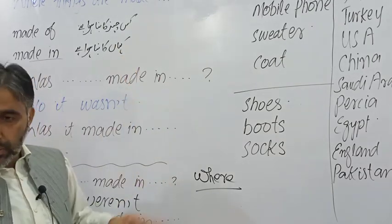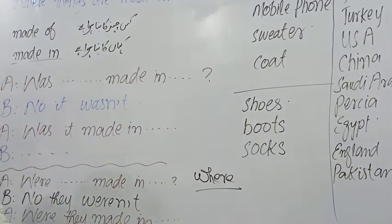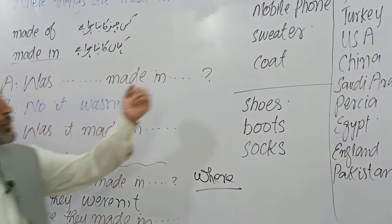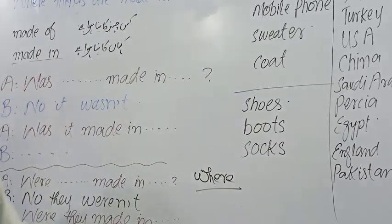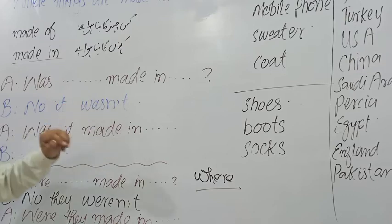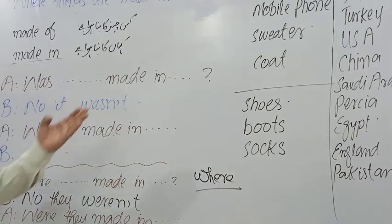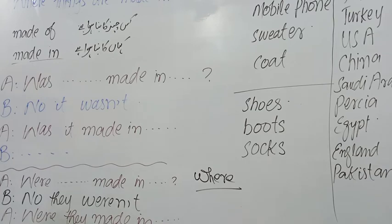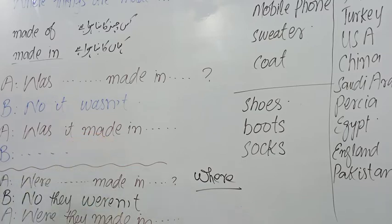So, in this way we practice our work. But if I ask you — the coat: Was it made in India? No, it wasn't. The coat is singular, so: Was it made in China? No, it wasn't. Was it made in Egypt? No, it wasn't. Was it made in Pakistan? Yes, it was. Pakistan mein yeh coat bana hua hai.